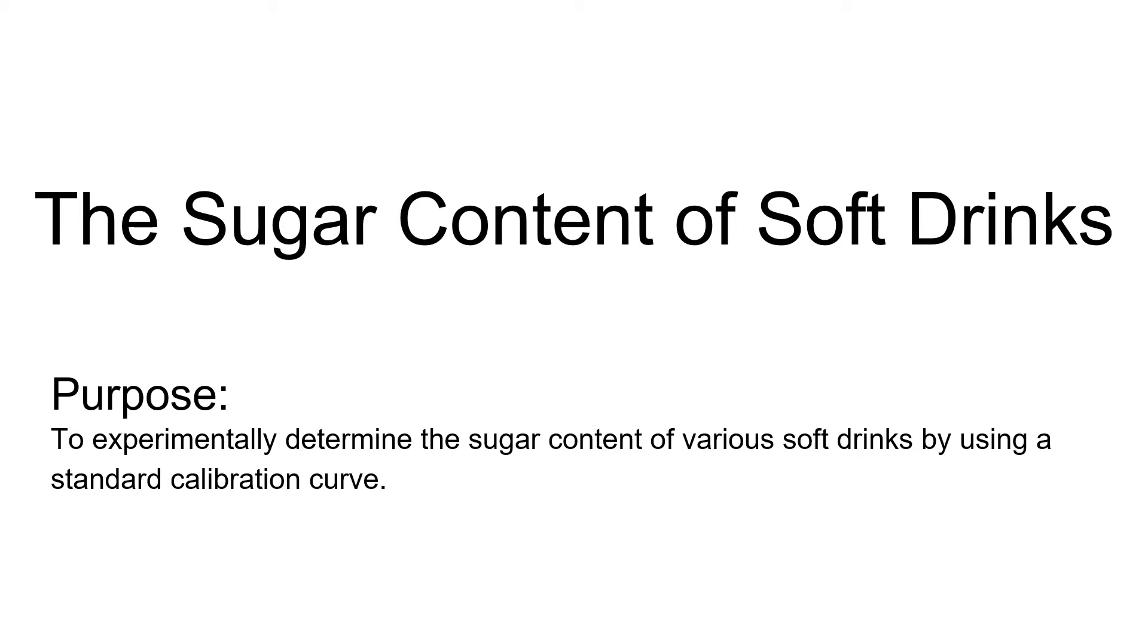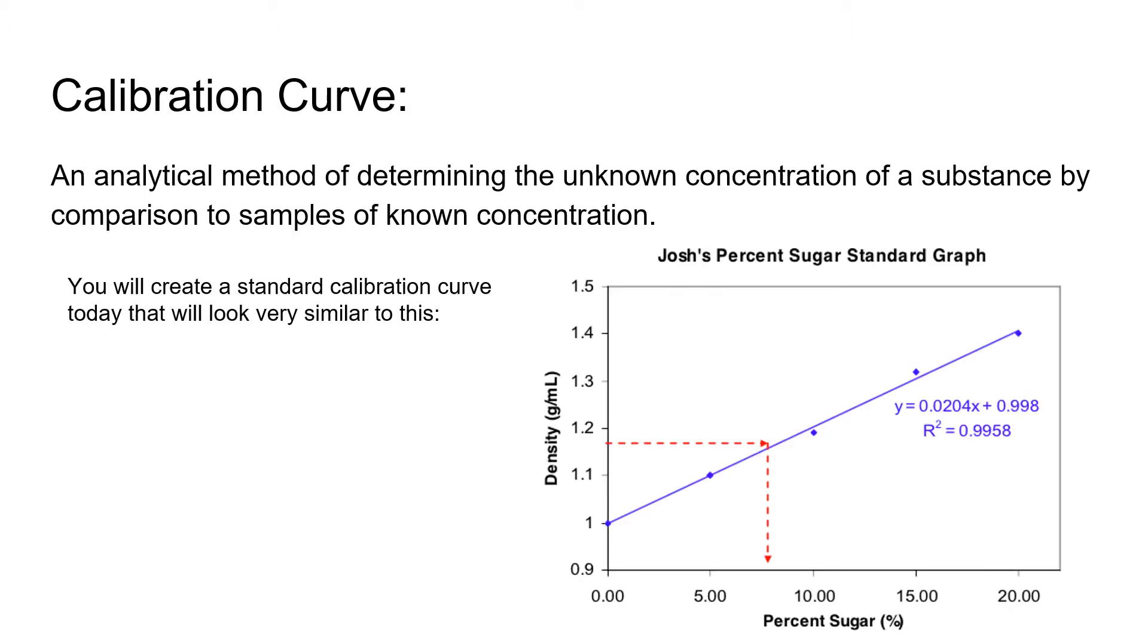This week we will be figuring out the sugar content of soft drinks. The purpose of this lab is to experimentally determine the sugar content of various soft drinks using a calibration curve. A calibration curve is a way to determine the unknown concentration of a substance by comparing to samples of known concentrations.